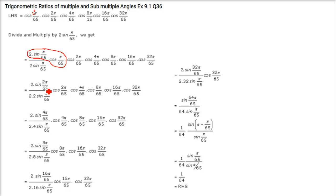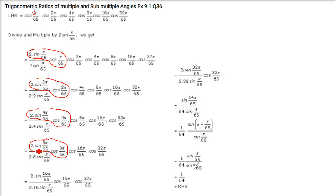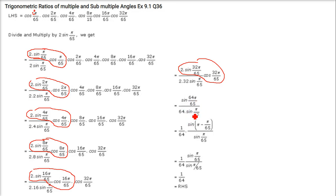Again multiply numerator and denominator by 2. This becomes sin(4π/65). Again multiply by 2 to get sin(8π/65). Every time you multiply numerator and denominator by 2, applying the double angle formula. You get sin(16π/65), then sin(32π/65), then sin(64π/65).